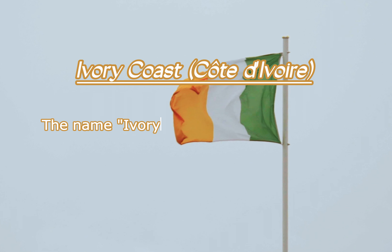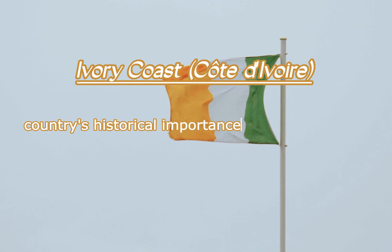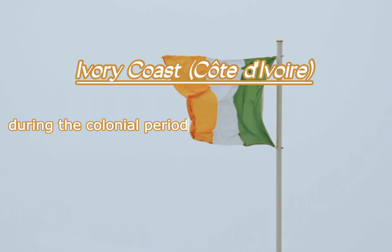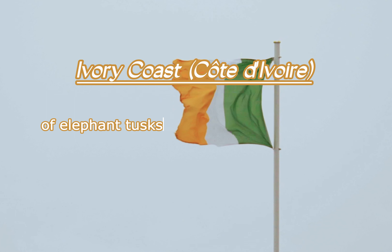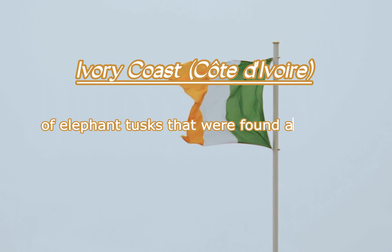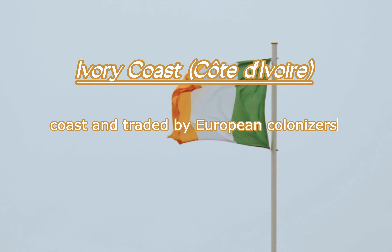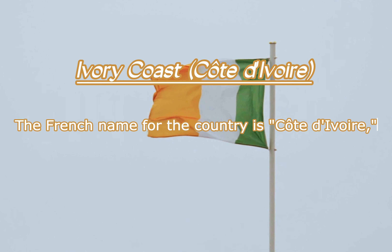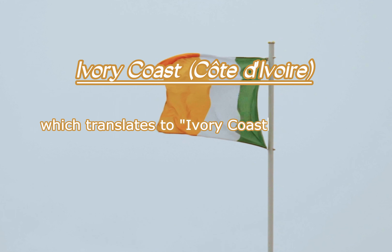Ivory Coast / Côte d'Ivoire: The name Ivory Coast is derived from the country's historical importance in the ivory trade. During the colonial period, it refers to the abundance of elephant tusks that were found along the coast and traded by European colonizers. The French name for the country is Côte d'Ivoire, which translates to Ivory Coast in English.